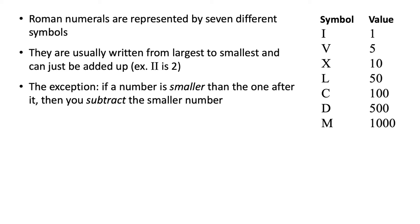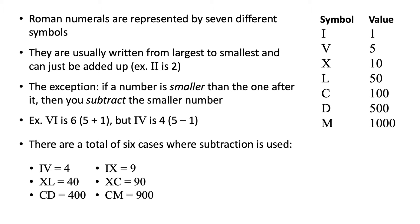The exception is if a number happens to be smaller than the one after it. If that's the case, then you have to subtract the smaller number instead. For example, VI is 6 since you just add 5 and 1. But IV is 4, because the 1 comes before the 5 and is also less than 5, so you subtract the 1 instead — 5 minus 1 is 4. It turns out there are only 6 cases in the Roman numeral system where you're allowed to do this, and they're all listed here.